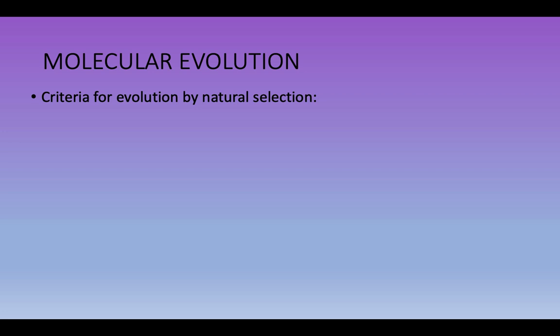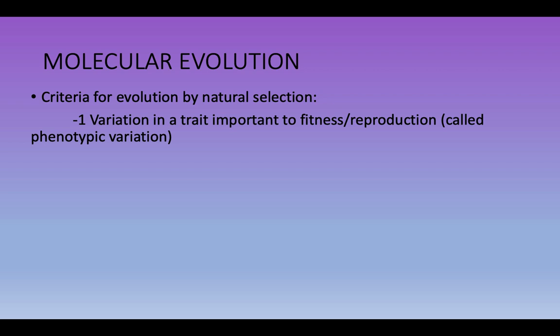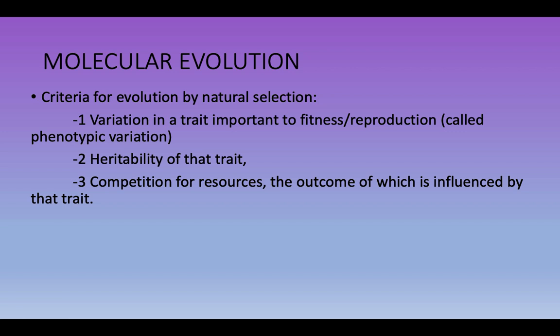Darwin outlines criteria that drive evolution by natural selection, which we can also describe as change in allele frequencies. First, we would expect variation in a trait tied to fitness or reproductive success — phenotypic variation. From a genetics standpoint, we need genetic variation that contributes to phenotypic variation. Second, we need heritability of that trait — it can't just be a plastic response to the environment, it has to be heritable and passed on.